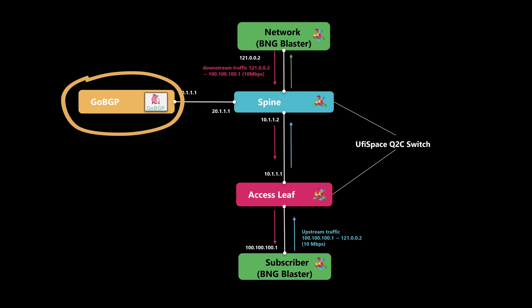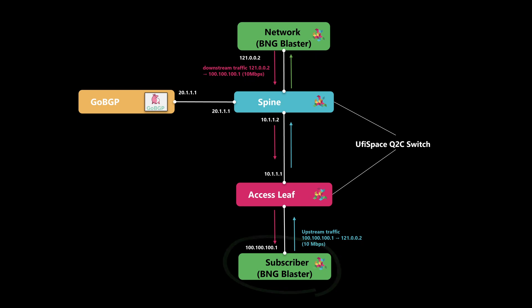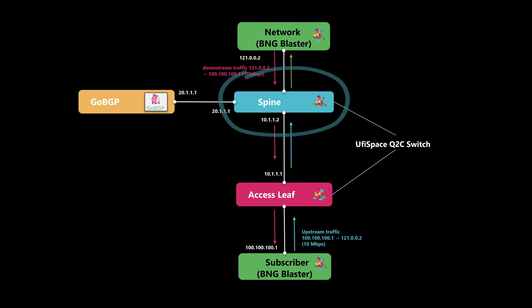GoBGP simulates the real network analyzer in the network, which will detect the DDoS attacks and generate the flow spec rules. In this topology, we will assume that the subscriber is the source of the DDoS attack, detected by GoBGP, and we will see how we can mitigate the attack using flow spec in the RT Brick network.